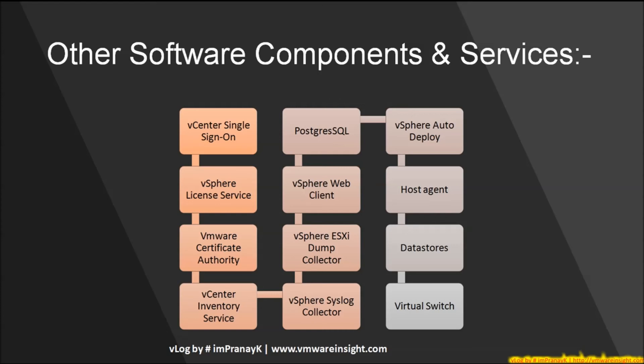Host Agent is basically used to establish connectivity between vCenter and ESXi hosts. Datastores are where all virtual machine files are stored when we create virtual machines — we'll describe this in more detail in our next modules. Virtual Switch is similar to a physical network switch, which is used to connect physical servers and physical ESXi hosts. Now that we have virtual machines, virtual switches are used to establish networking between virtual environments.